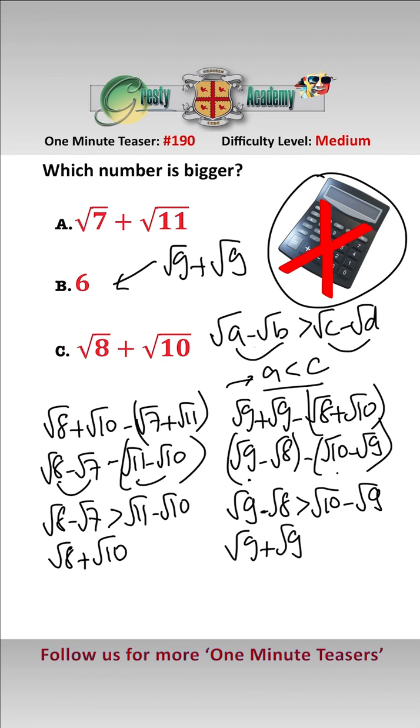Therefore, root 9 add root 9 is greater than root 8 add root 10. So therefore, the biggest number of the three is 6, option B.